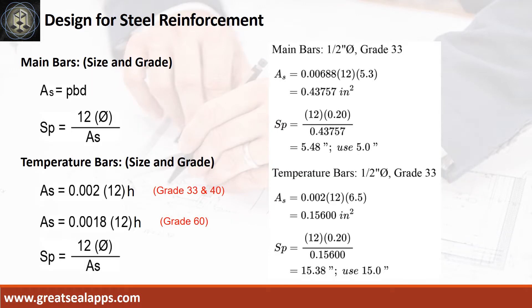Given rho equals 0.00688, B equals 12 inches, and D equals 5.3 inches, the area of steel for main bars is 0.4757 square inches, and the spacing for 1/2 inch diameter bar is 5 inches on center. The area of steel for temperature bars is 0.156 square inches, and the spacing for 1/2 inch diameter bar is 15 inches on center.